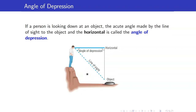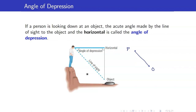If the person is looking down at an object, the acute angle made by the line of sight and the horizontal line is called the angle of depression. Remember that you always draw a horizontal line — never a vertical line. The common mistake is to draw this one as a vertical line, but that is not the angle of depression.